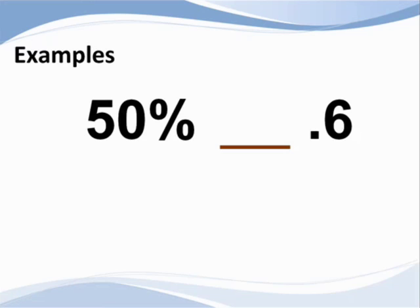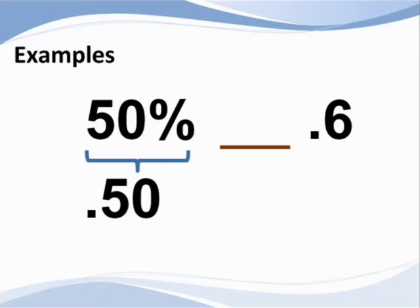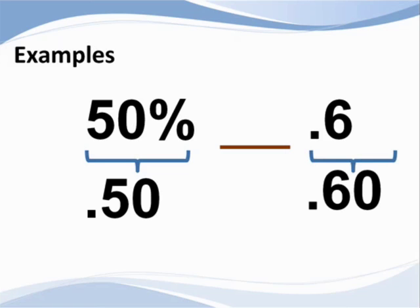I'm going to change each number to an equal decimal since that is easier for me. If you remember our mini lesson on converting percents to decimals, you will remember that 50% is the same as .50, because we move the decimal point two places to the left and drop the percent sign. 6 tenths is the same as .60, since we can add as many zeros to the right of a decimal point without changing its value.